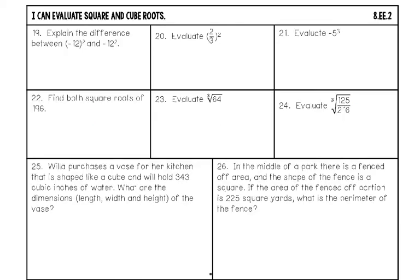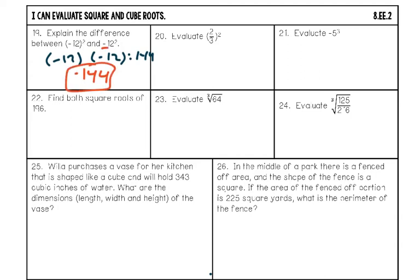Number nineteen: explain the difference between (−12) squared with parentheses and −12 squared without. With parentheses, negative twelve squared is 144 — a positive result. Without parentheses, you do 12 squared first which is 144, then take the opposite, giving negative 144. The first gives positive 144, the second gives negative 144. Always use parentheses if you want your answer to be positive when squaring a negative number.